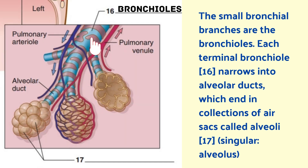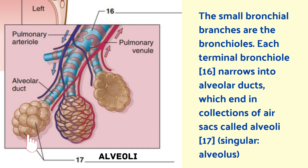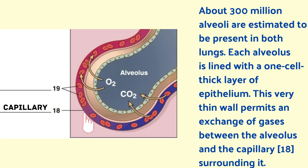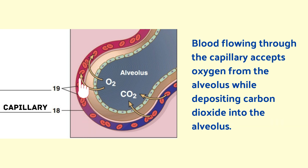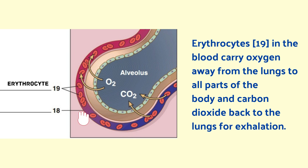The small bronchial branches are the bronchioles. Each terminal bronchiole narrows into alveolar ducts, which end in a collection of air sacs called alveoli. About 300 million alveoli are estimated to be present in both lungs. Each alveolus is lined with a one-cell thick layer of epithelium. This very thin wall permits an exchange of gases between the alveolus and the capillary surrounding it. Blood flowing through the capillary accepts oxygen from the alveolus while depositing carbon dioxide into the alveolus. Erythrocytes in the blood carry oxygen away from the lungs to all parts of the body and carbon dioxide back to the lungs for exhalation.